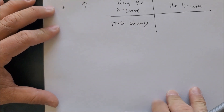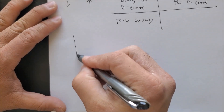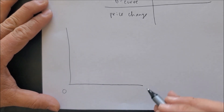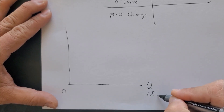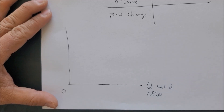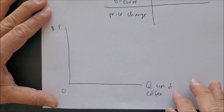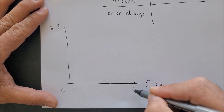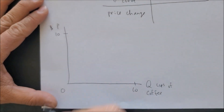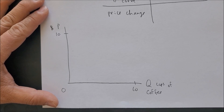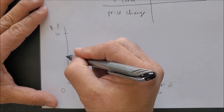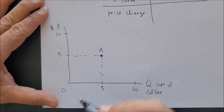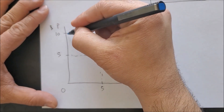To illustrate a price change affecting the demand curve, we draw our graph. On the x-axis we have quantity — cups of coffee — and on the y-axis we have the price of coffee. Using 10 on each axis, our equilibrium point is at five cups of coffee and five dollars. We can call this point A, and from there we draw our demand curve.